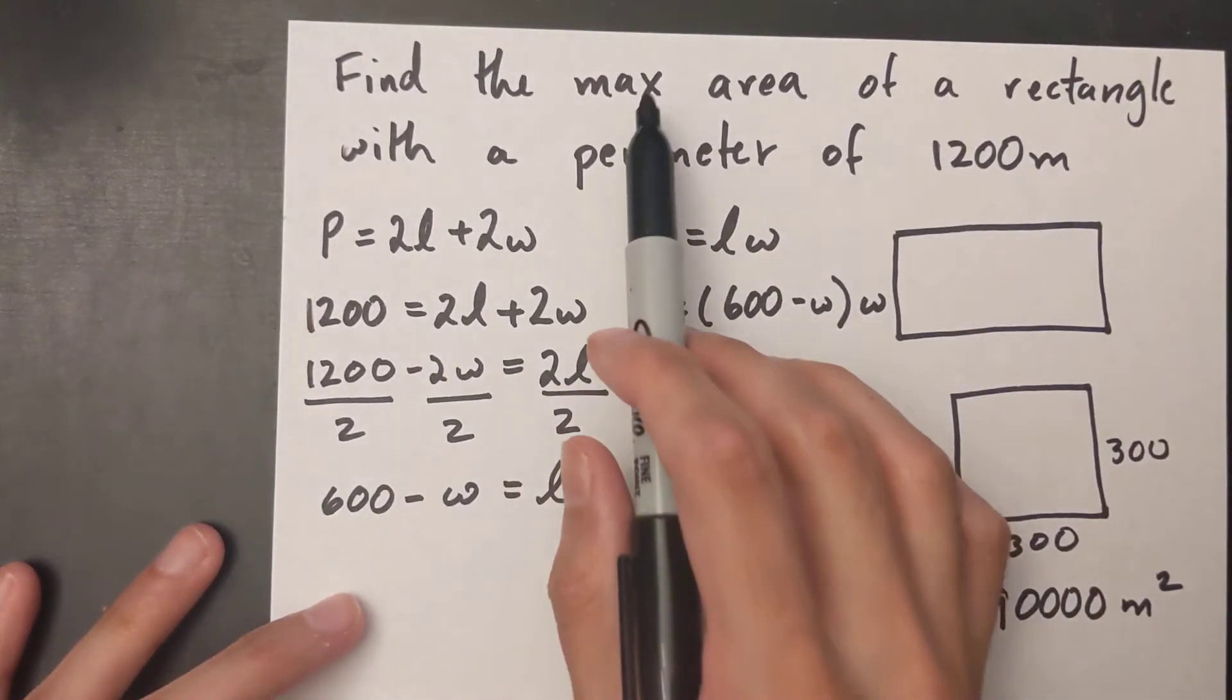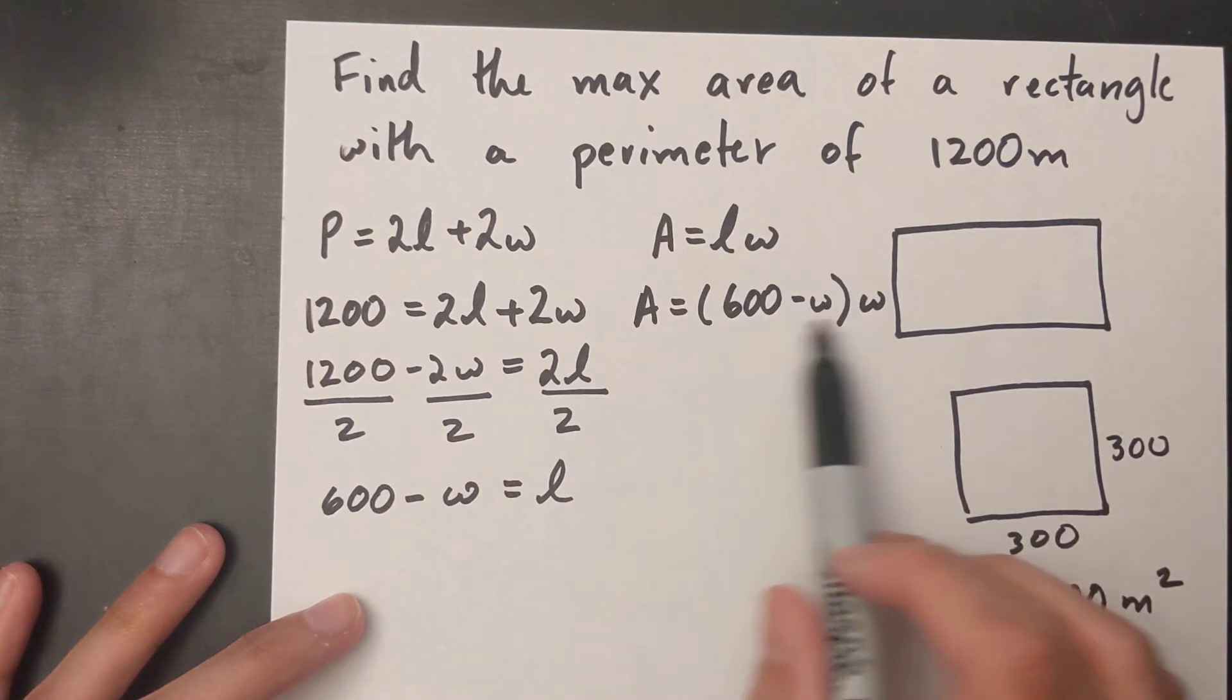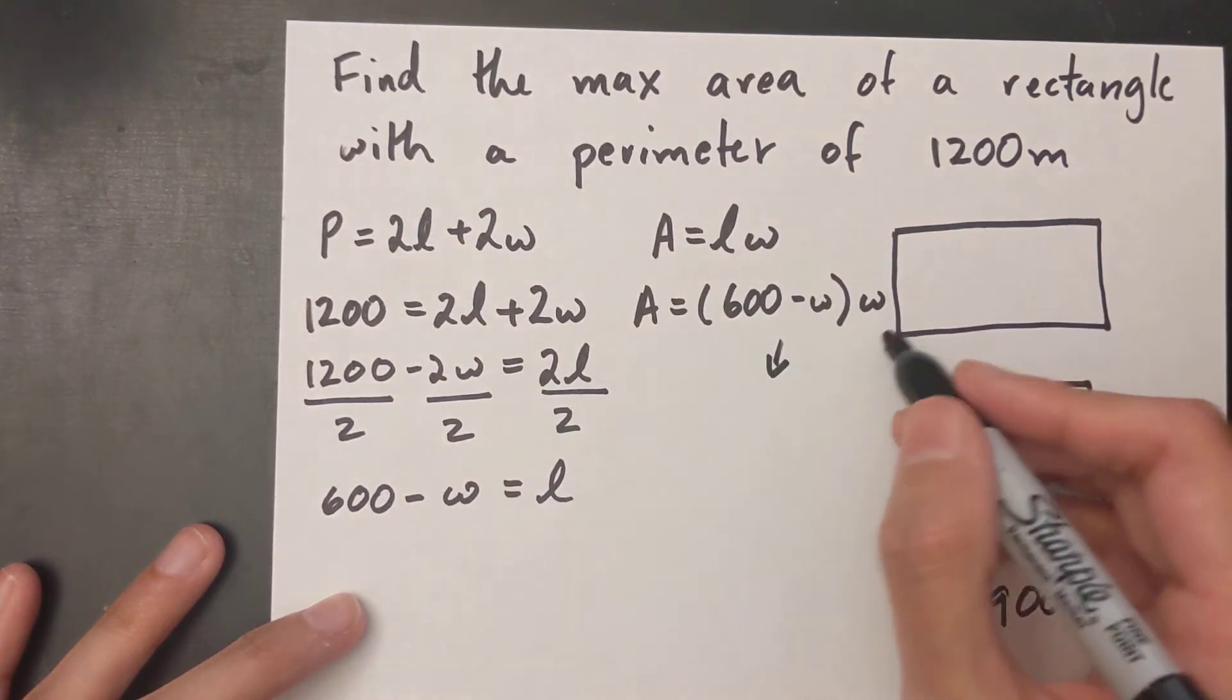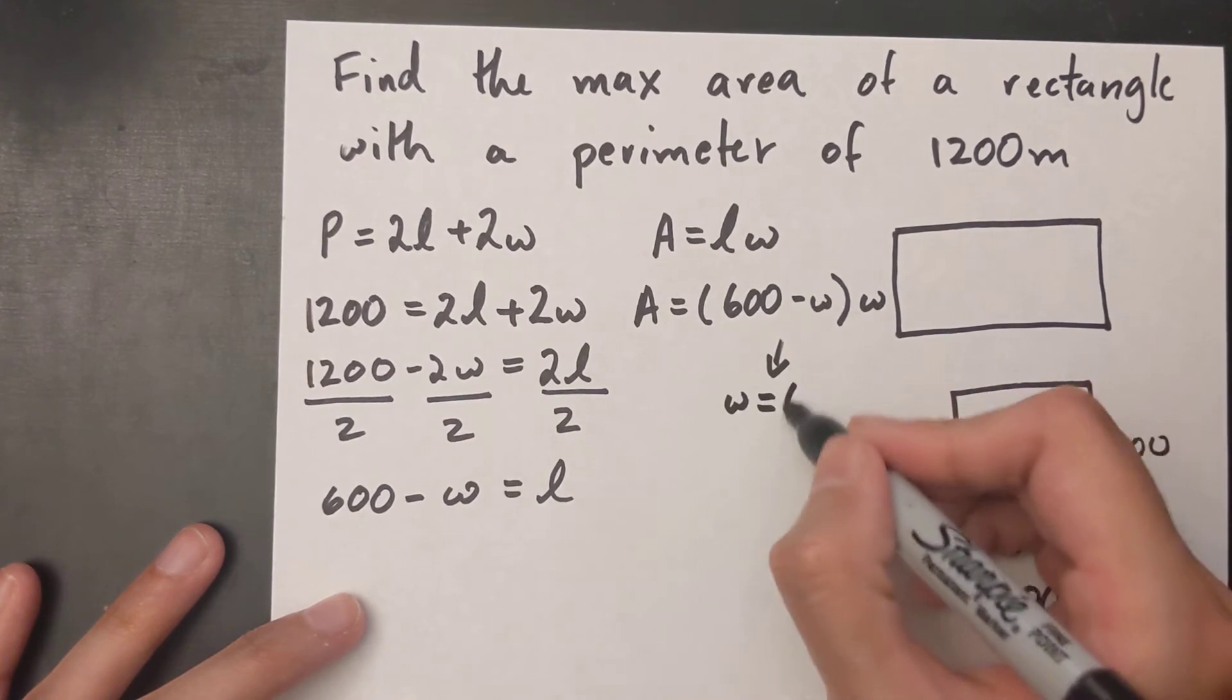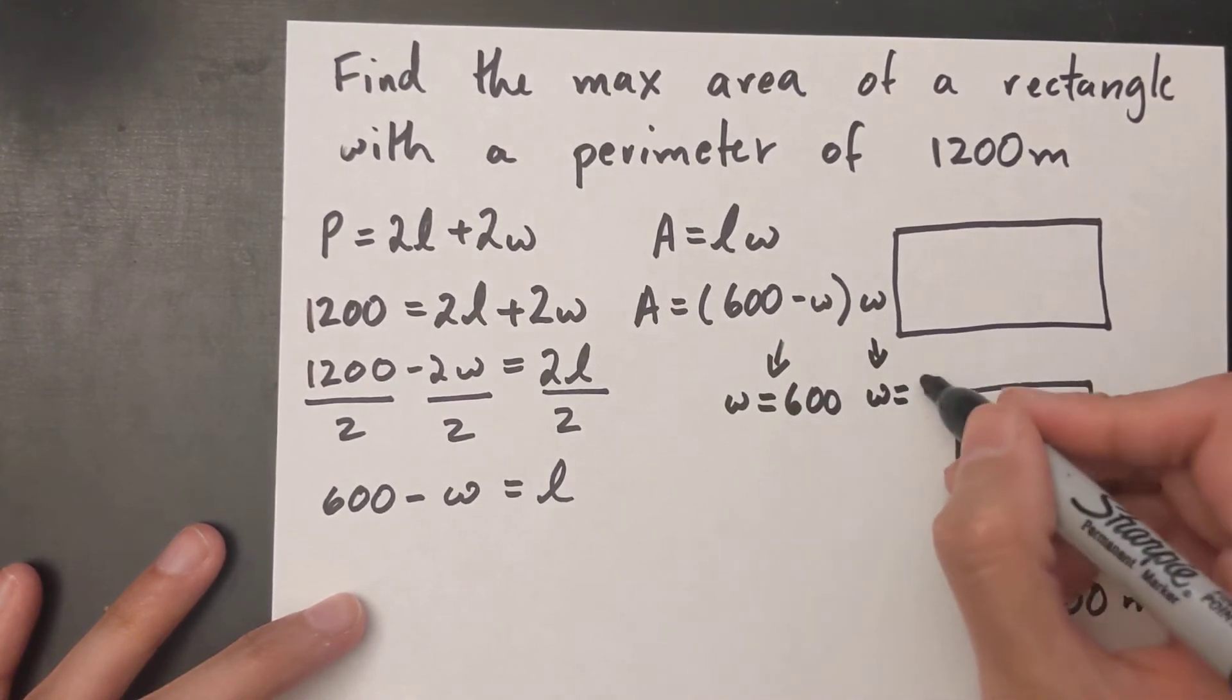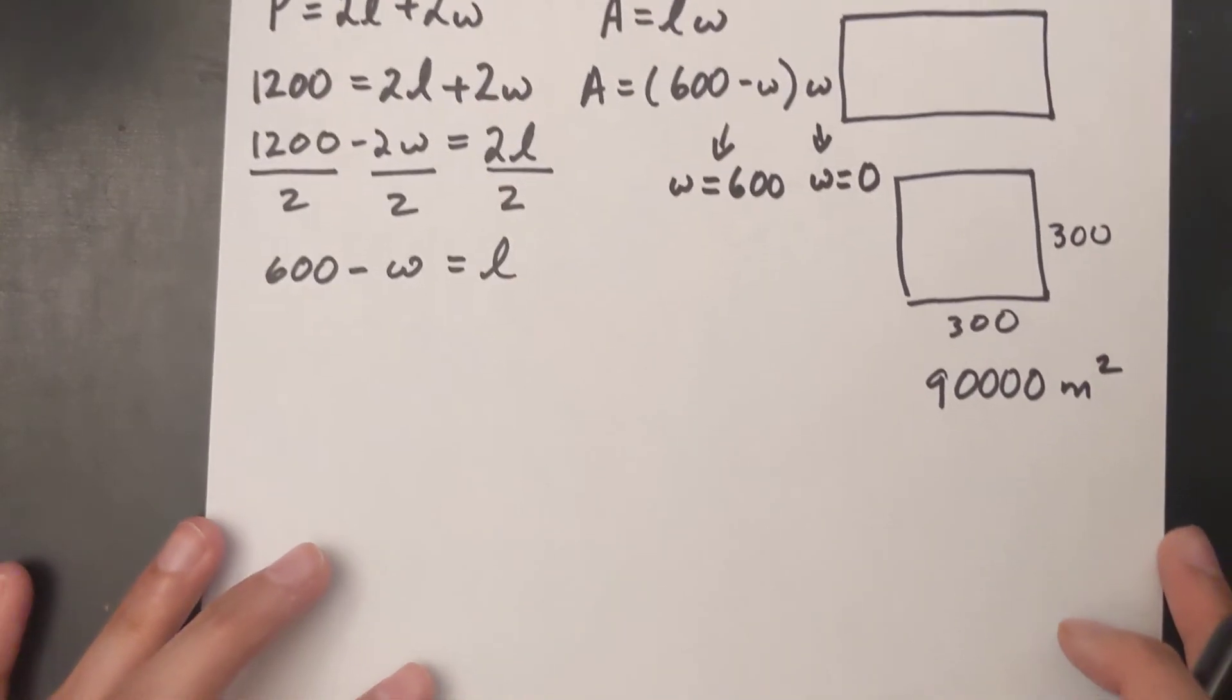And I need to find my max area. So this is already in factored form, so I can tell my solutions. For this one it's going to be W equals 600, and for this one it's W equals zero. So let's think about this on a graph.